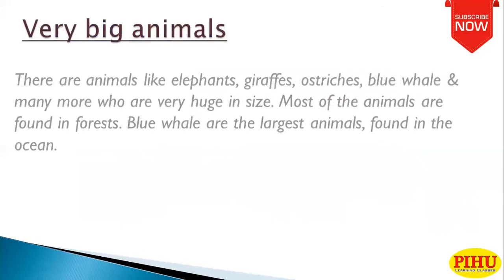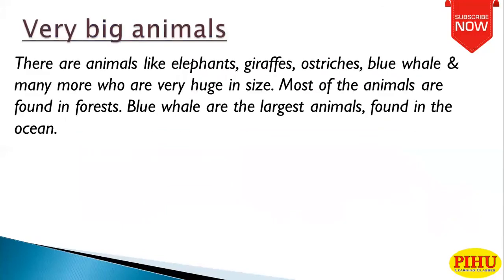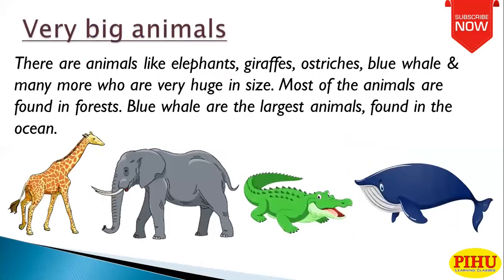Very big animals: there are animals like elephant, giraffe, ostriches, blue whale and many more who are very huge in size. Most of the animals are found in the forest. Blue whales are the largest animals found in the oceans.